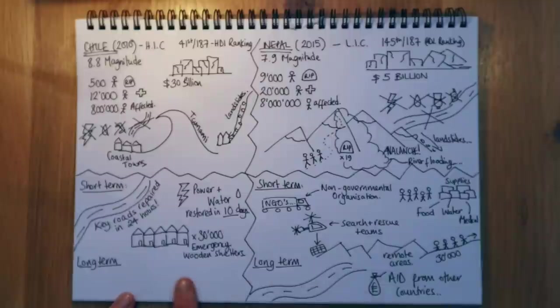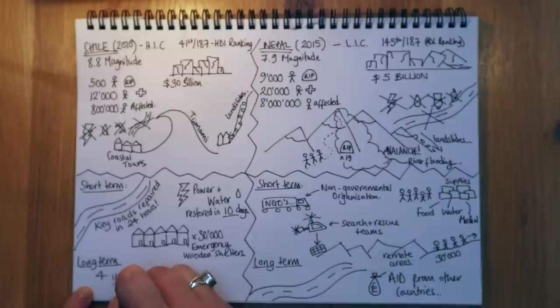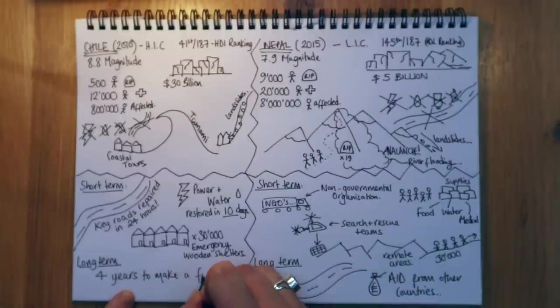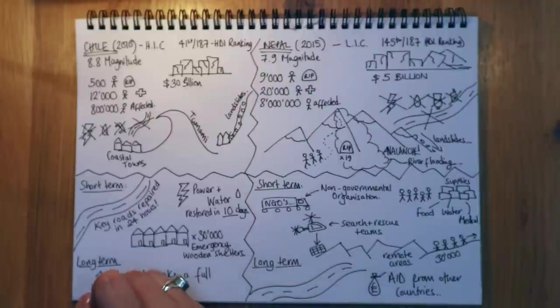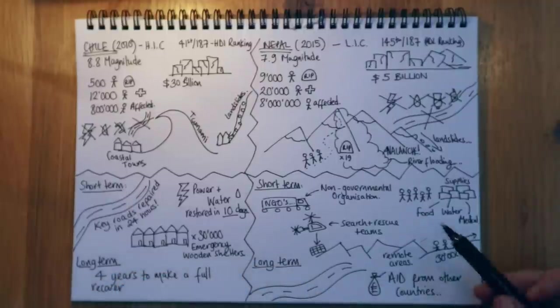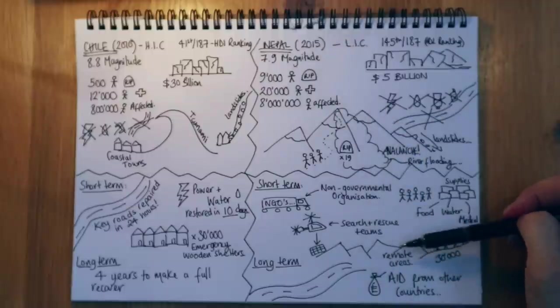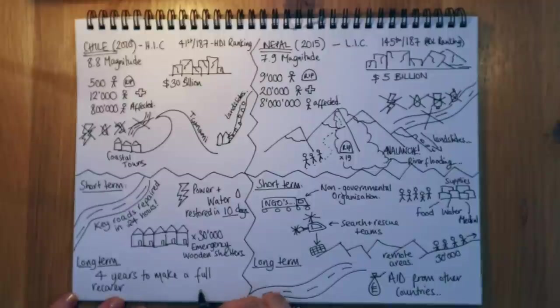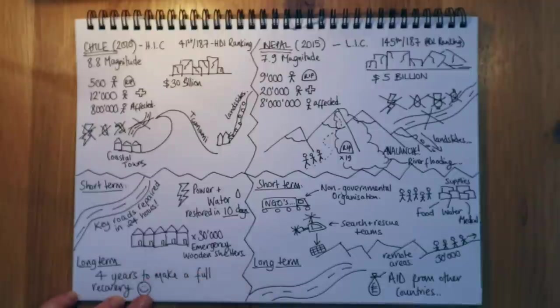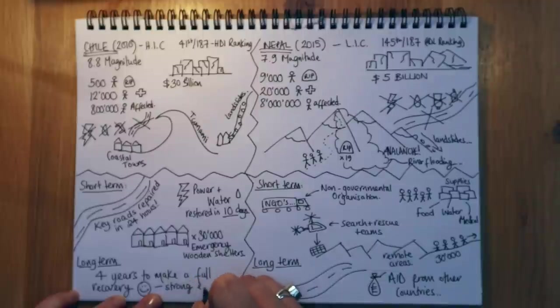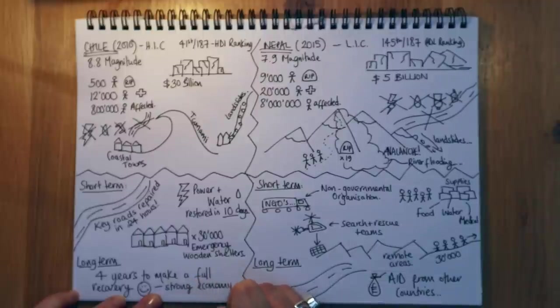If we go back to Chile in the long term, well, they took time. It took sort of four years, actually, to make a full recovery, which sounds actually like a long time. But there are parts of Kathmandu and Nepal which have still not recovered and won't do for many years to come. So actually, four years to make a full recovery, it's actually quite impressive. And it's even more impressive that they did it with their own strong economy and government.